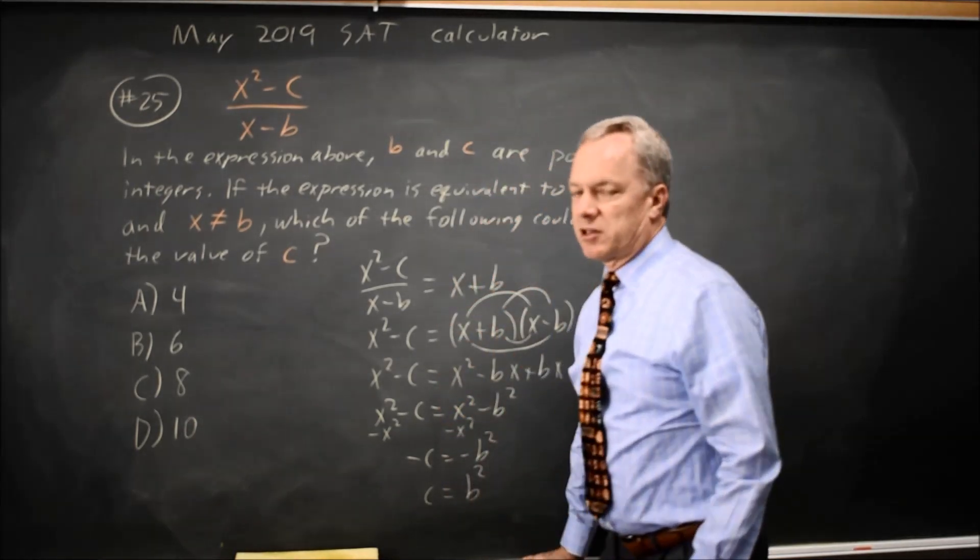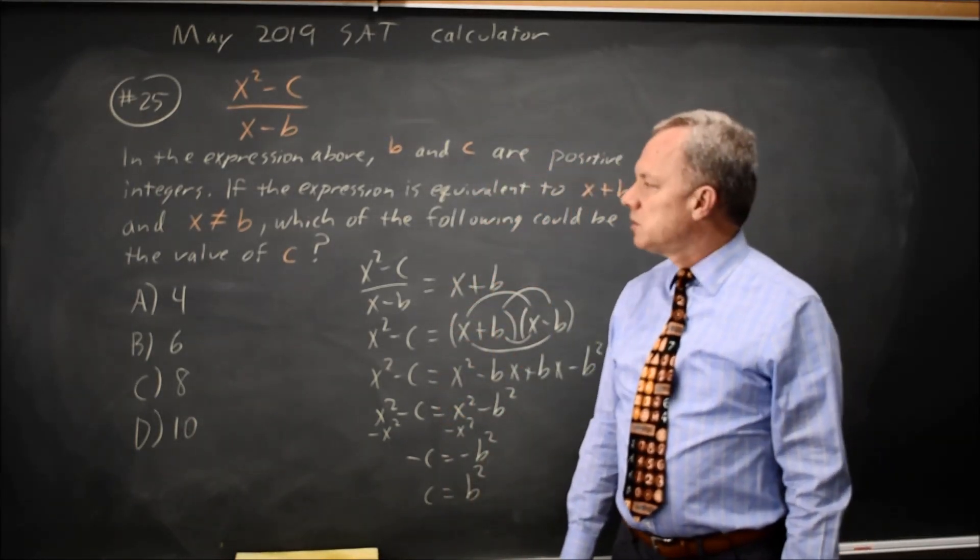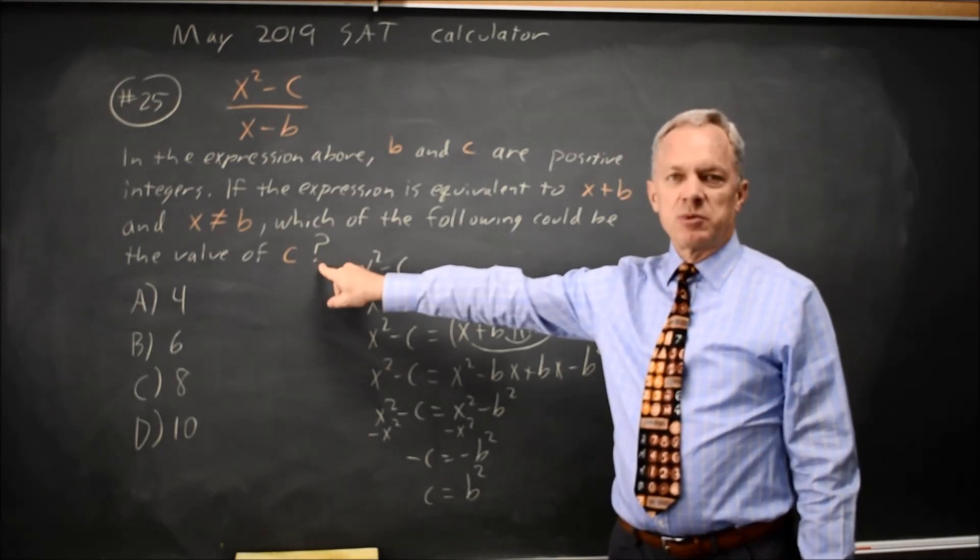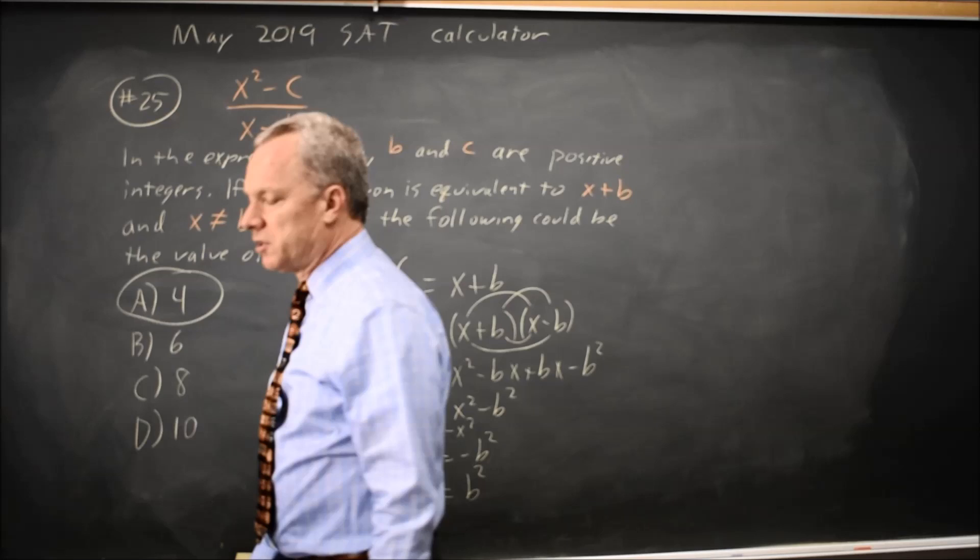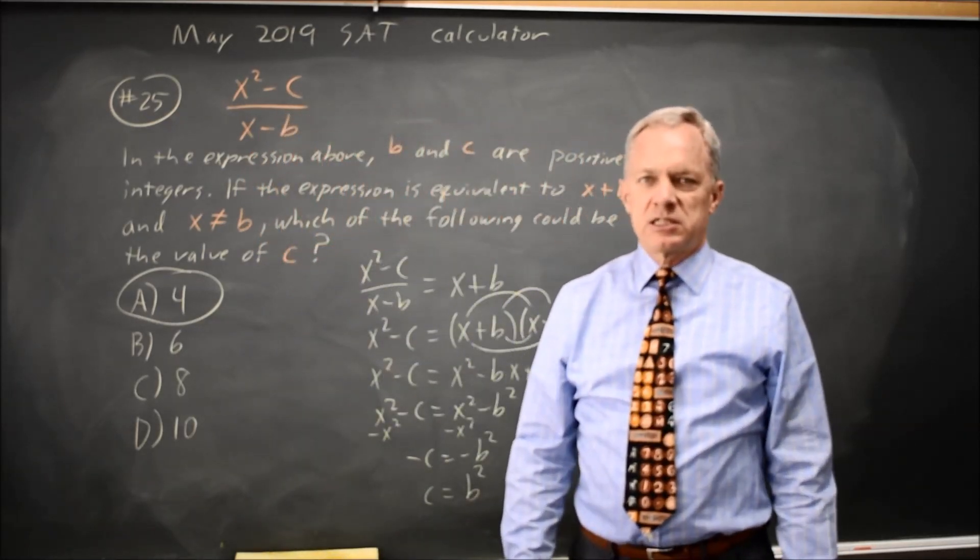But they told us b and c are integers. So the value of c must be the square of an integer. And the only answer choice that's the square of an integer would be choice A, c equals 4.